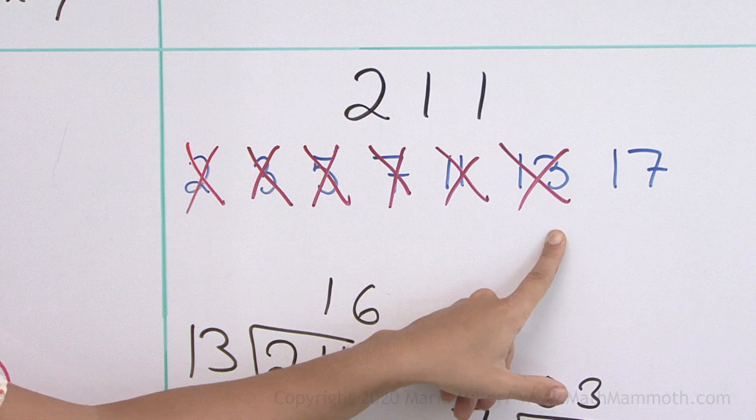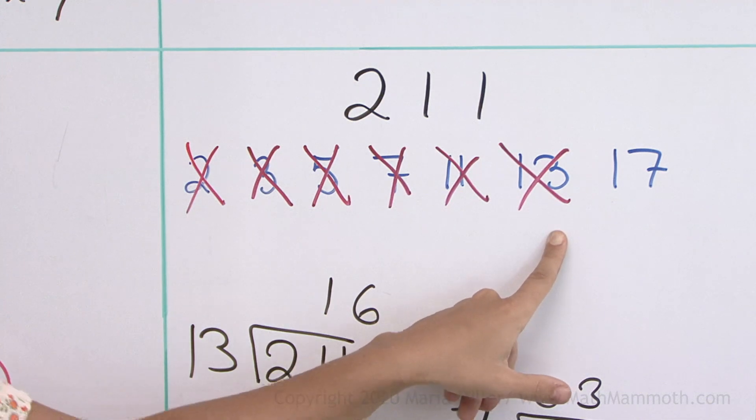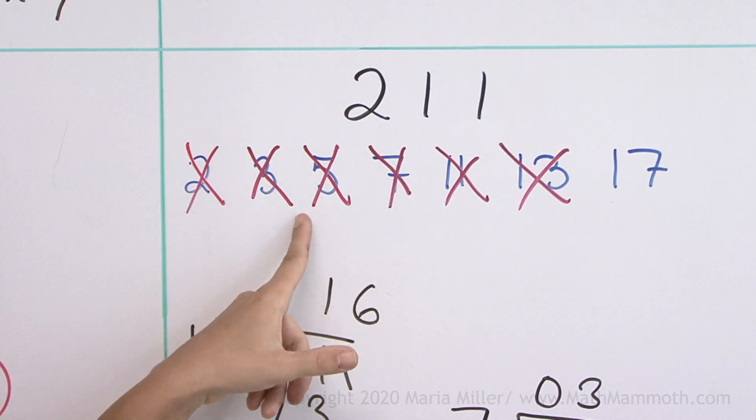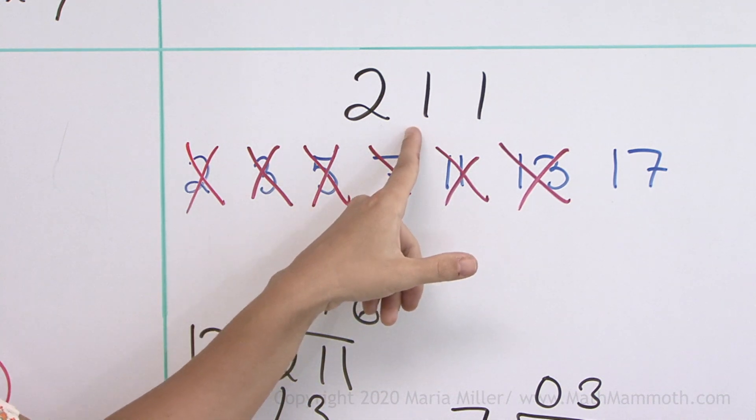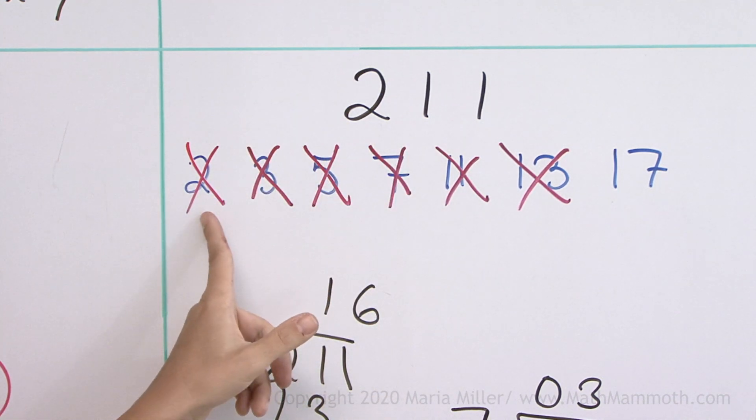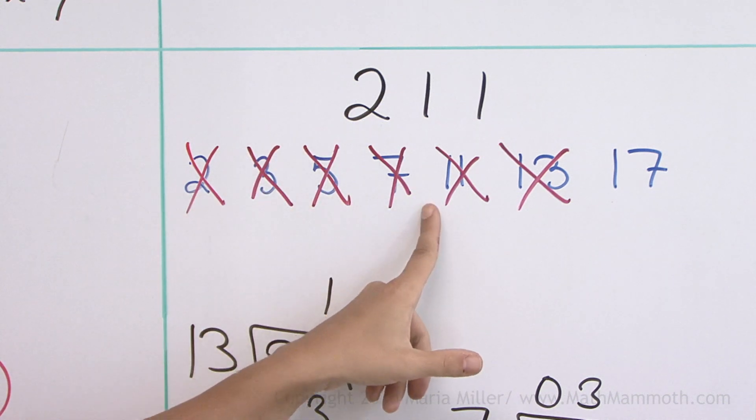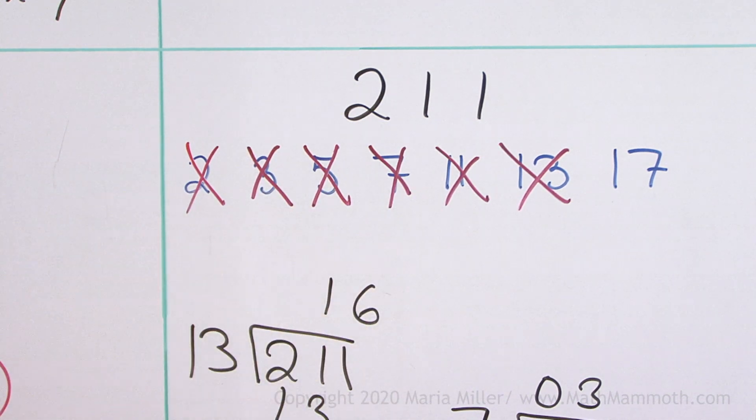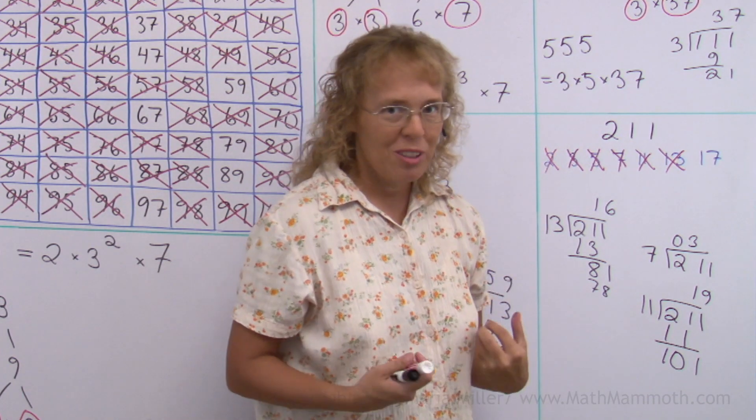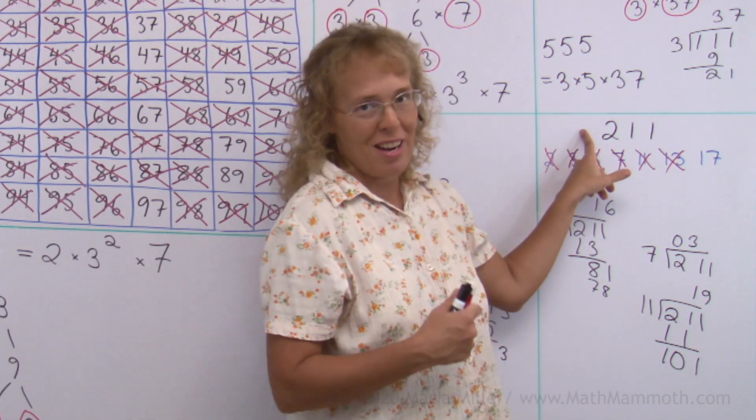And you might say, well, you haven't checked 4 or 6 or 9. But I don't need to check 4 or 6 or 9 because this cannot be divisible by 4 since it's not divisible by 2. It cannot be divisible by 9 because it was not divisible by 3. So my search is over. This must be prime.